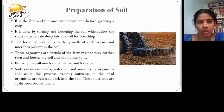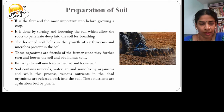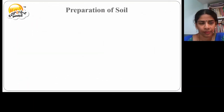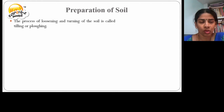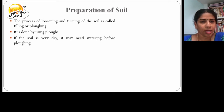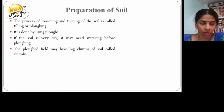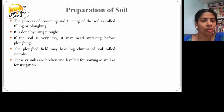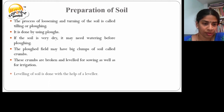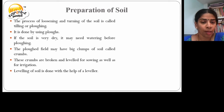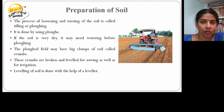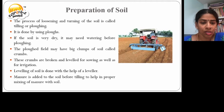The process of loosening and turning of the soil is called tilling or plowing. It is done by using plows. If the soil is very dry, it may need watering before plowing. A plowed field may have big clumps of soil called crumbs. These crumbs are broken and leveled for sowing as well as for irrigation. Leveling of the soil is done with the help of a leveller. Manure is added to the soil before tilling to help in proper mixing of manure with the soil.